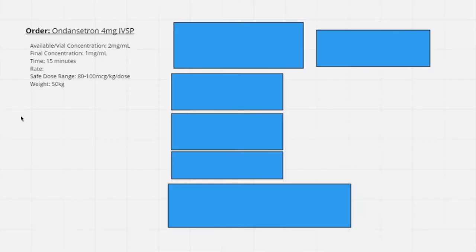According to our IV resource book, the vial concentration is 4 milligrams per milliliter, which we can simplify to 2 milligrams per milliliter. Our final concentration is 1 milligram per milliliter, and our administration time is 15 minutes. We will calculate the rate later, and our safe dose range we figured out from research. The weight given in the order is 50 kilograms, so we'll begin by calculating our safe dose range.